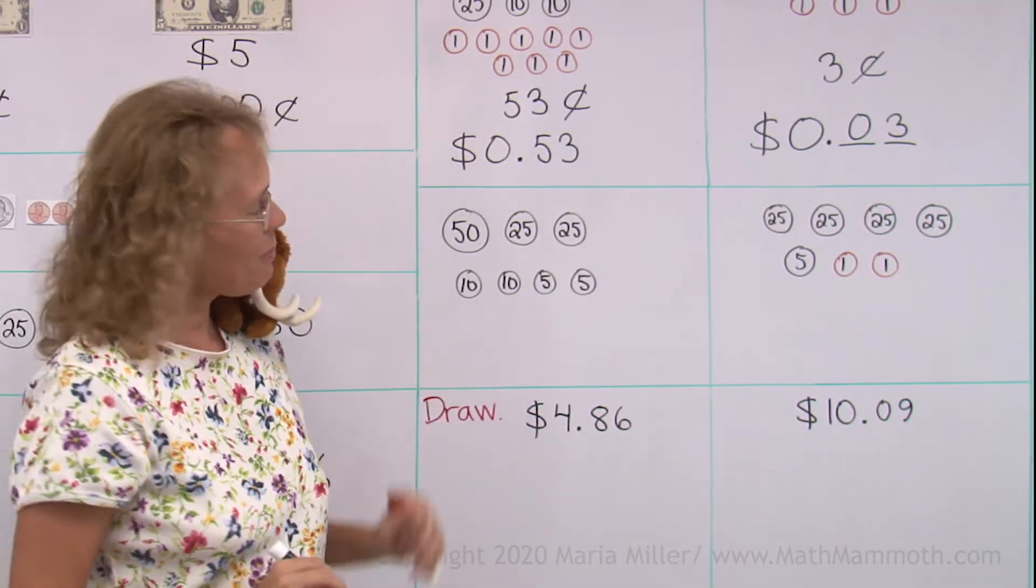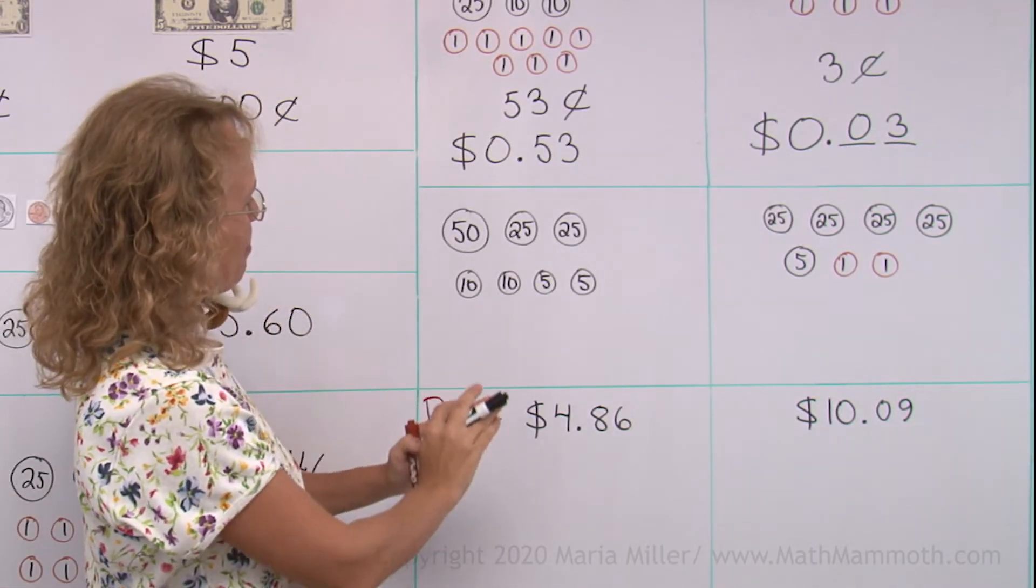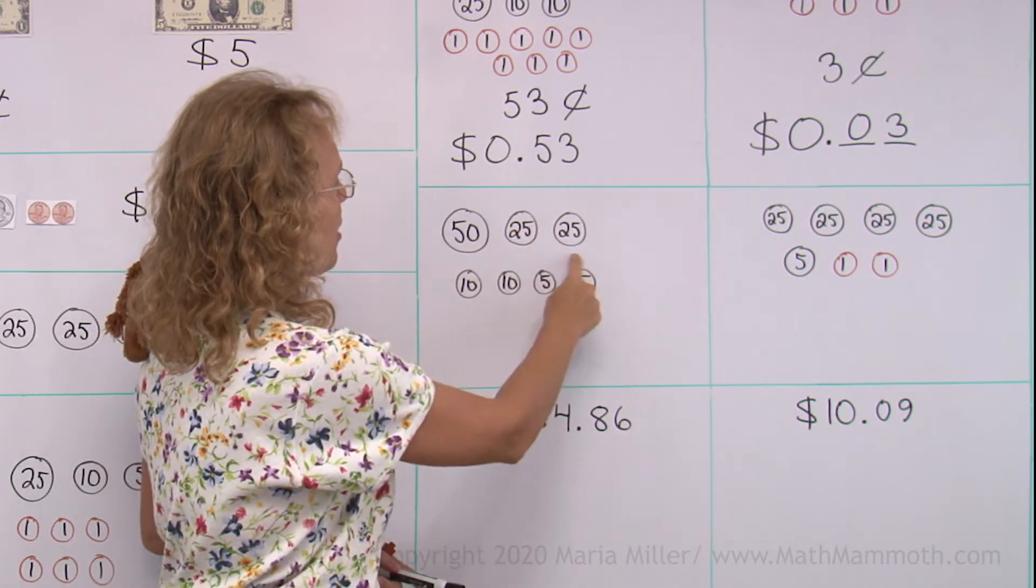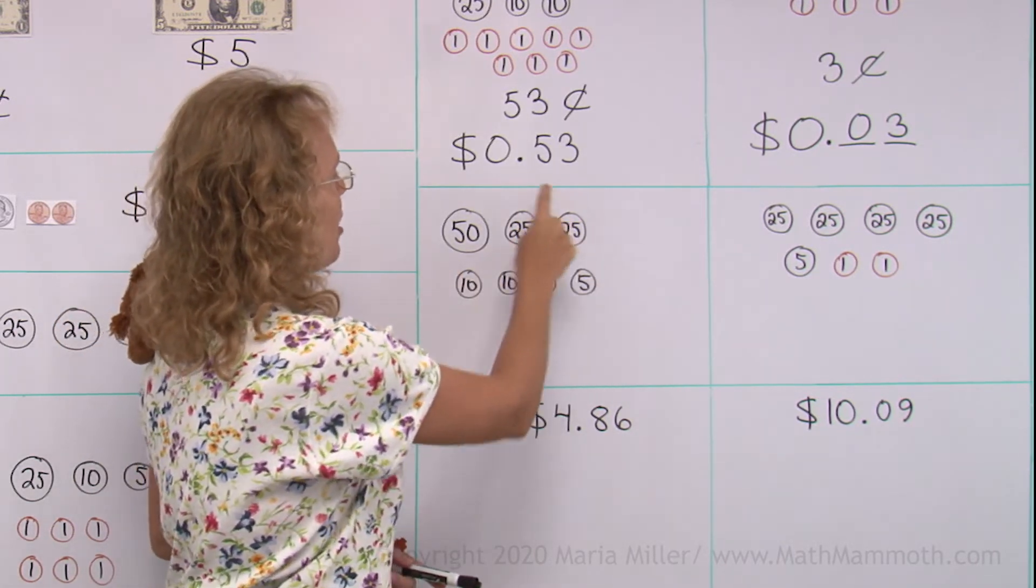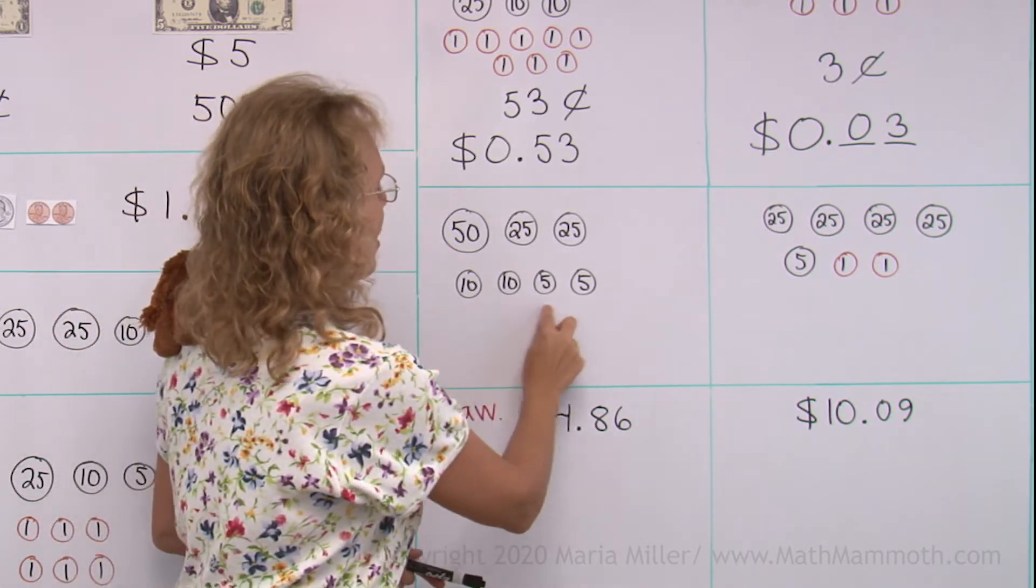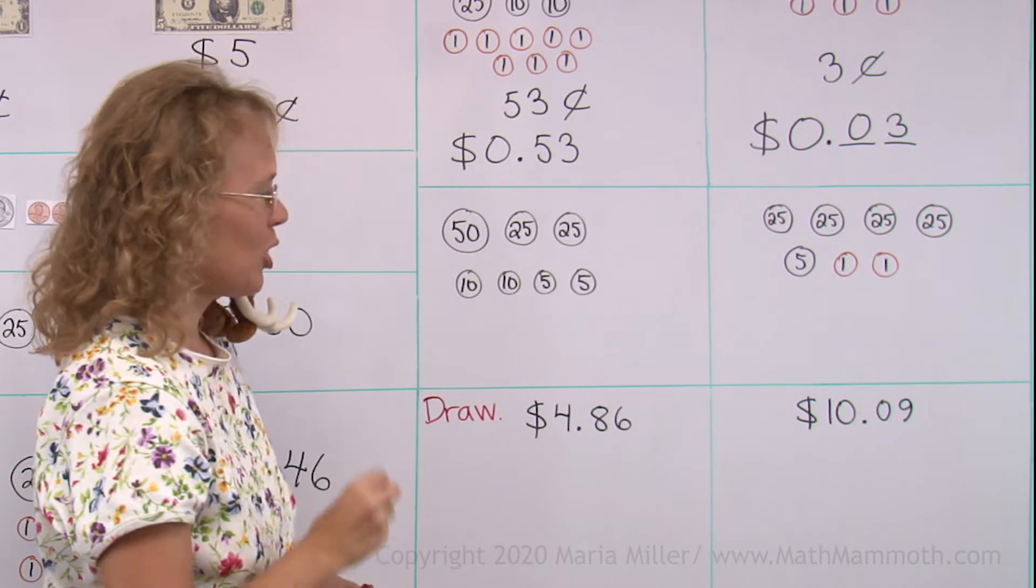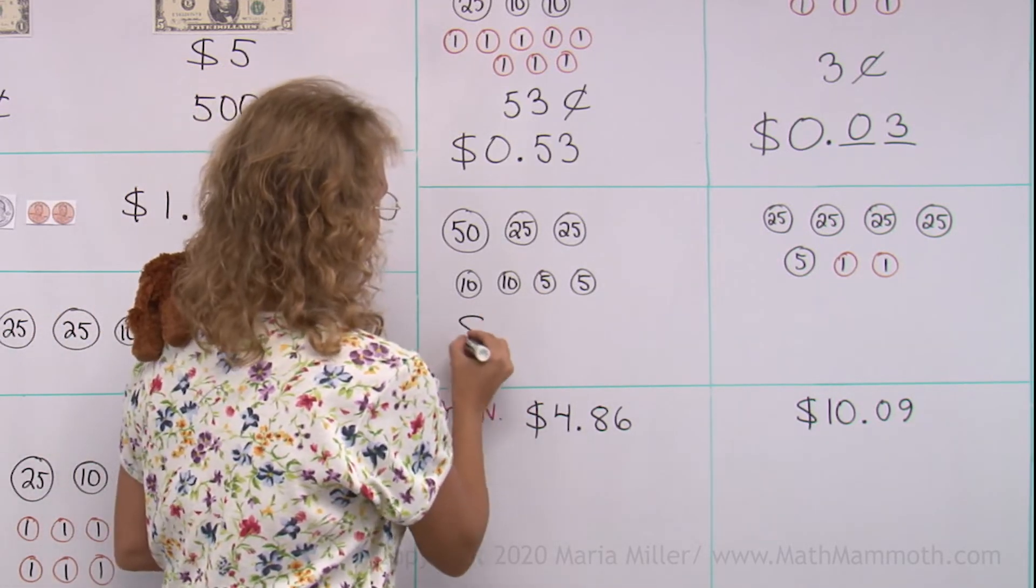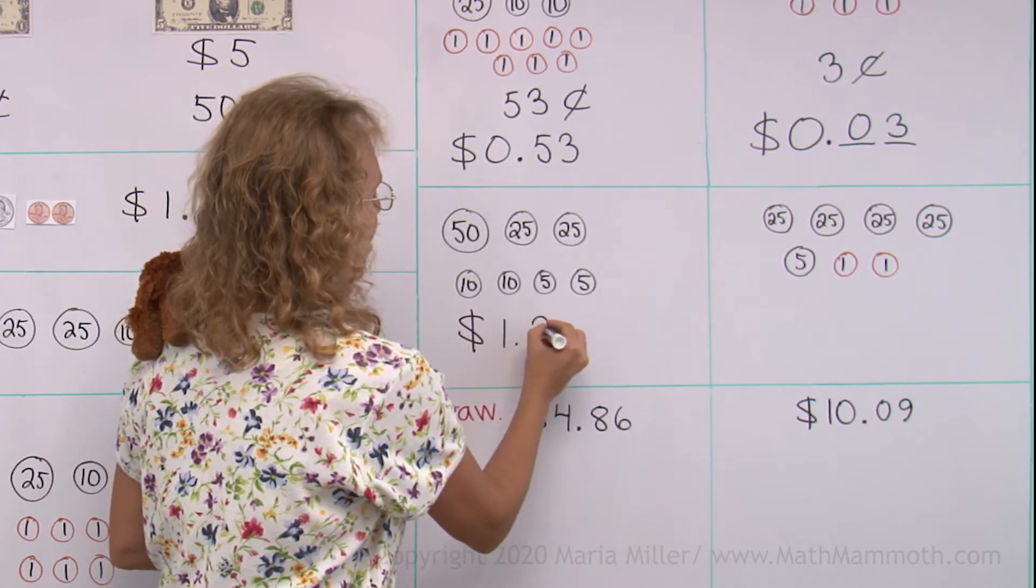Now how about here? How much money do we have? Fifty. These make fifty together, so fifty and fifty makes a dollar. And then twenty and thirty. So did you get one dollar thirty, right? So, one dollar and thirty cents.